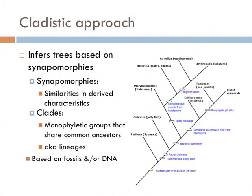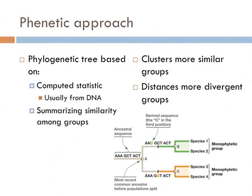But does it accurately represent evolutionary history? The theory is that the more similar two taxa are morphologically, the more closely related they are genetically. For the most part, this approach works, but it has its challenges. The phonetic approach creates phylogenies based on computed statistics, and those statistics are calculated almost exclusively using DNA. In looking at DNA sequences, the phonetic approach clusters groups of taxa that are more closely similar with respect to their DNA, and groups that are very different are clumped further away.